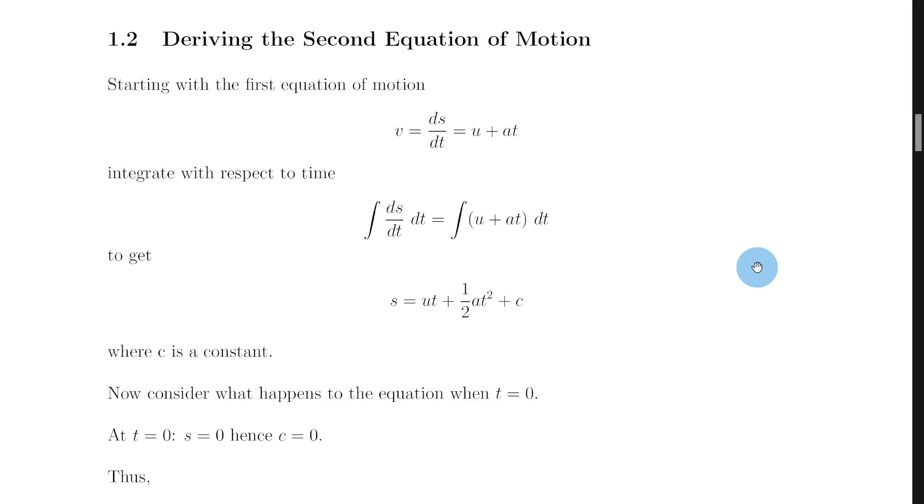Just like the first equation of motion v equals u plus at, the second equation of motion was also seen at higher level and then repeated again at advanced higher level and you might be asked to derive it in the exam. So how do you do that?